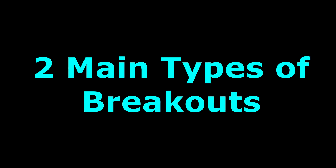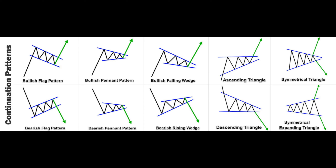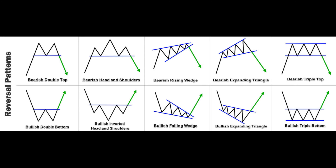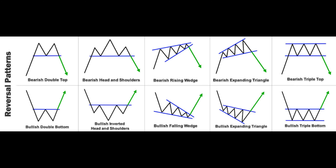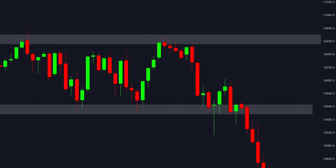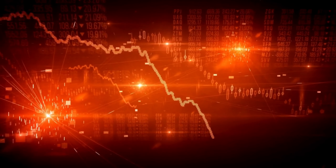There are two main types of breakouts. First, we have the continuation breakout, which means that the price breaks out in the same direction as the trend. We also have what is called a reversal breakout, and that occurs when the price breaks out in the opposite direction of the existing trend, indicating a strong potential trend reversal.